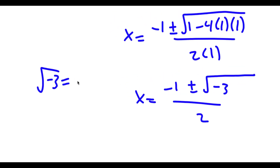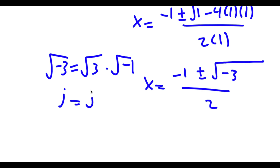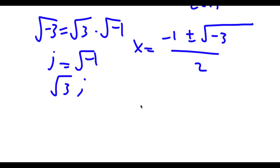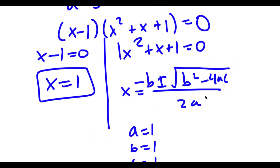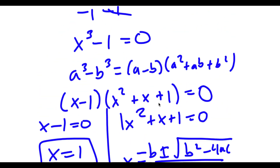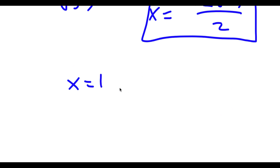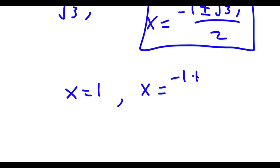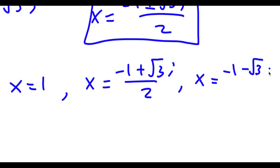The square root of negative 3 is the same thing as the square root of 3 times the square root of negative 1. And the imaginary number i is equal to the square root of negative 1. So these are actually our three solutions of x: x equals 1, x equals negative 1 plus the square root of 3 times i over 2, and x equals negative 1 minus the square root of 3 times i over 2.